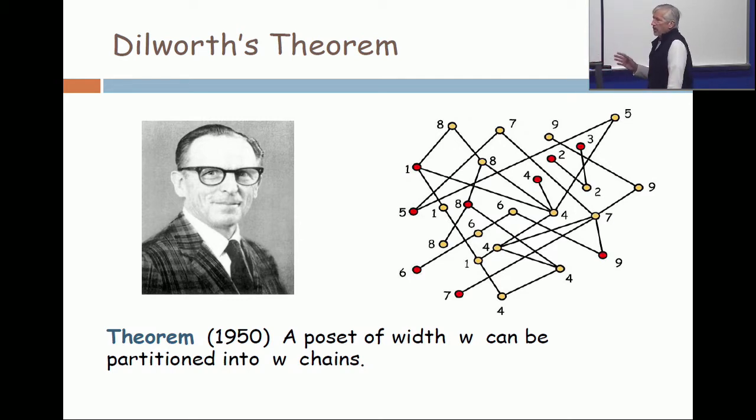There's a maximum antichain somewhere in a poset. In this instance, that maximum antichain has size nine, the red points.